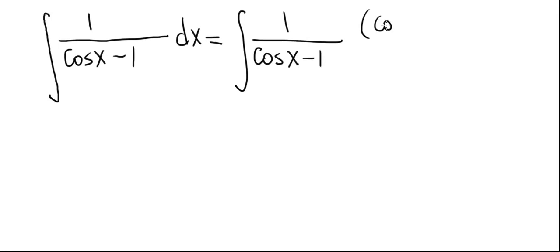Let's evaluate the integral of 1 divided by cosine of x minus 1. The first step is we're going to multiply both the numerator and denominator by cosine of x plus 1 over cosine of x plus 1.